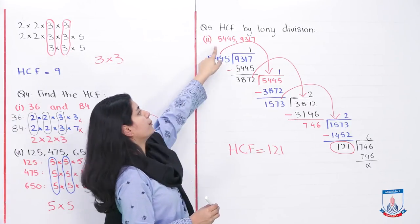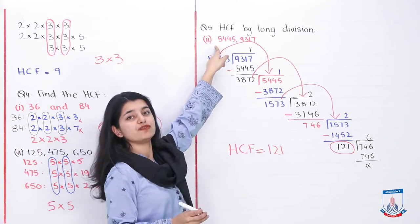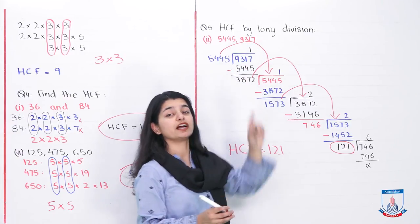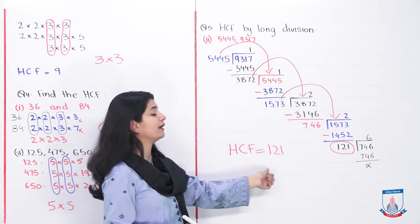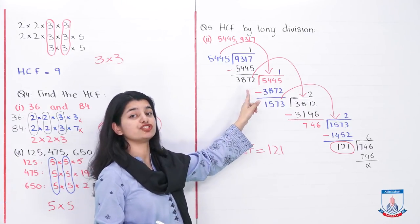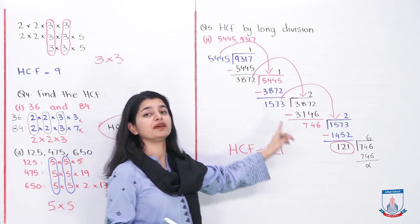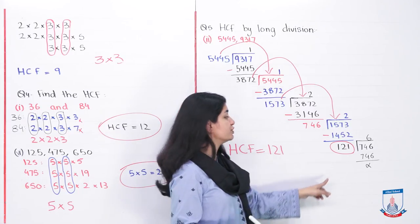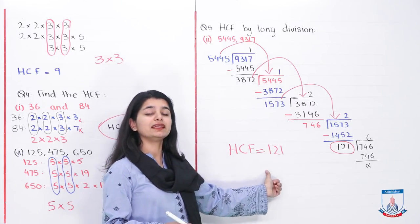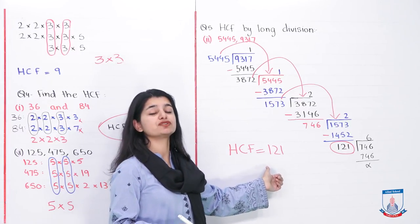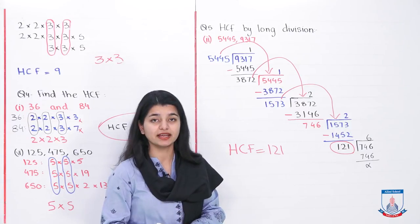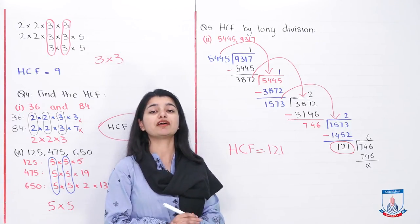So the highest common factor of 5,445 and 9,317 is 121. I used the long division method, repeatedly changing the dividend and divisor. When the remainder becomes zero, the divisor at that step is your HCF. This is the method to solve all parts of question number 5 — go through them one by one and complete question number 5.